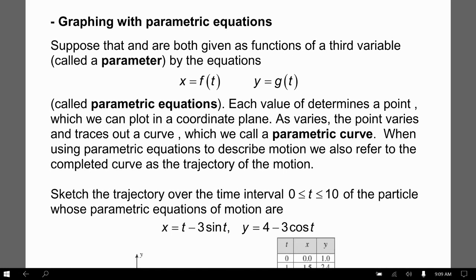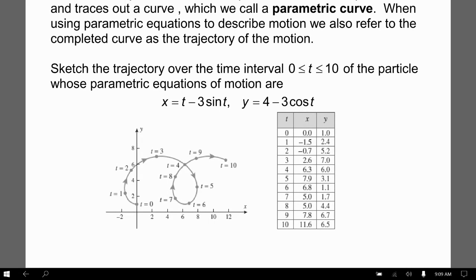To graph with parametric equations, we need t values for x and for y — that's what generates our ordered pairs. For example: sketch the trajectory over the time interval 0 to 10 of the particle whose parametric equations are x = t − 3sin(t) and y = 4 − 3cos(t). For each t value, plug it into the x and y equations to get the corresponding ordered pair, then plot the points. Note: I'll often say 'time' instead of t, because 99% of the time the parameter t represents time.